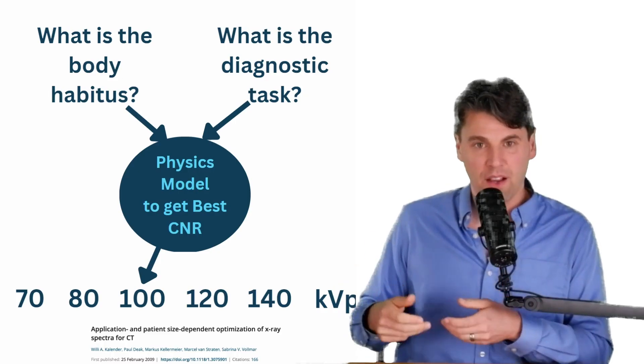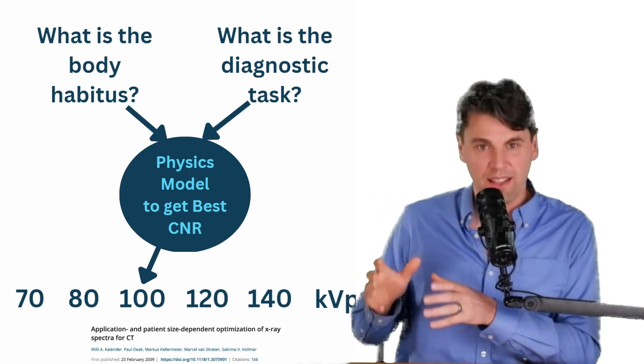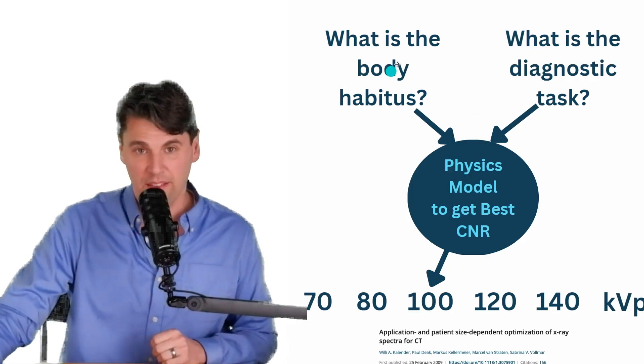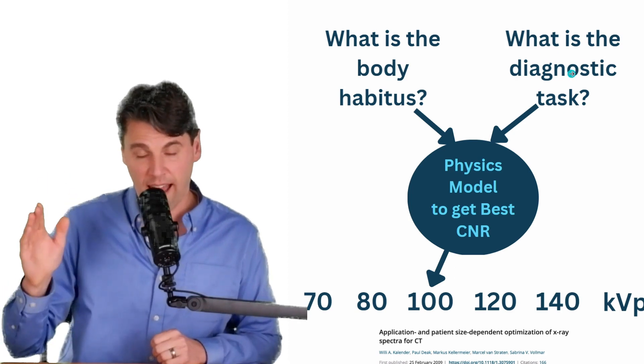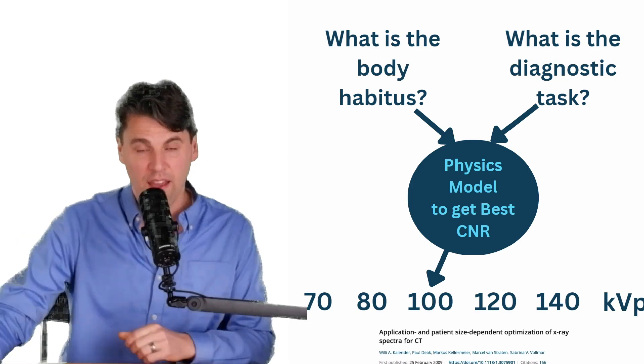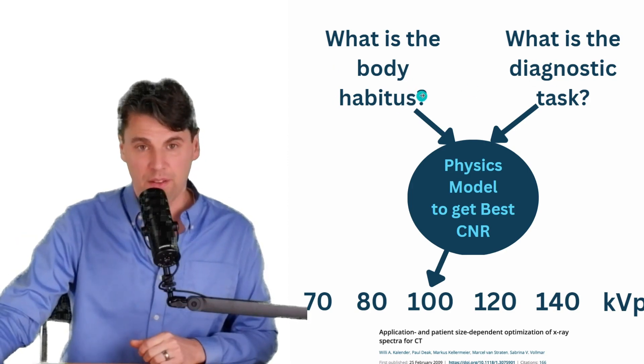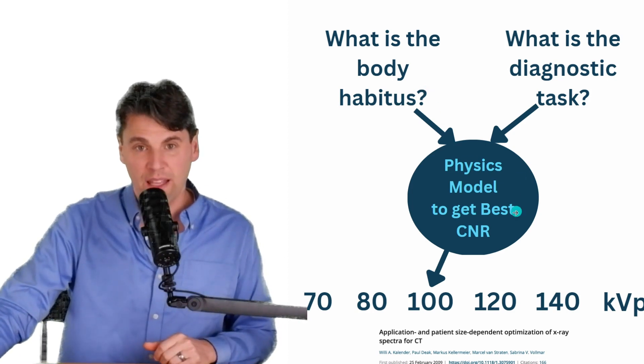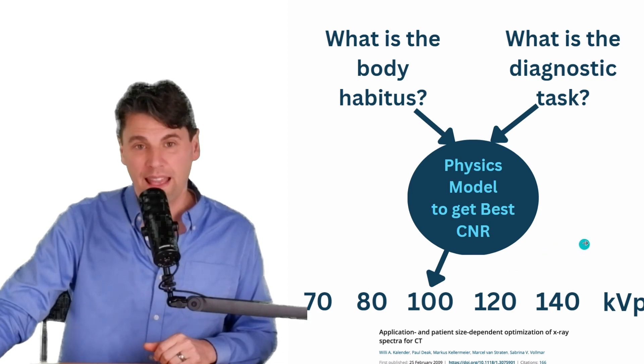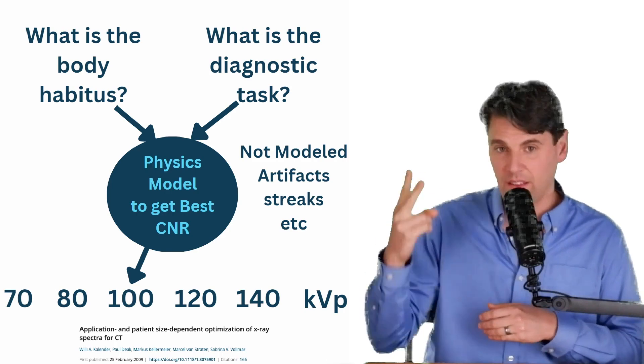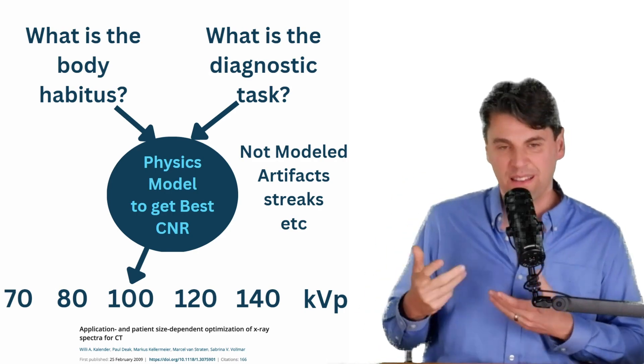So the basic physics model can help us to calculate what KVP we should use. We want to optimize here is the dose efficiency to get a contrast noise ratio. The contrast noise ratio is going to depend on these things here. What's the diagnostic task? So the two different materials that we're going to be looking at in that contrast task, and what is the body habitus? So how big is the object that we're trying to get through? And from those things, we can actually just use a physics model in order to compute what the KVP we should use on the system. Note that some of the other subtle things like the artifacts and the streaks, those aren't explicitly modeled here.